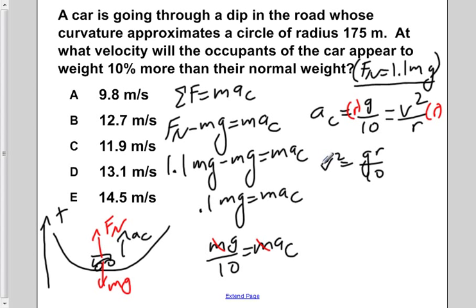And now to solve for v alone, we have to take the square root of both sides, leaving us with v is equal to the square root of gr divided by 10.